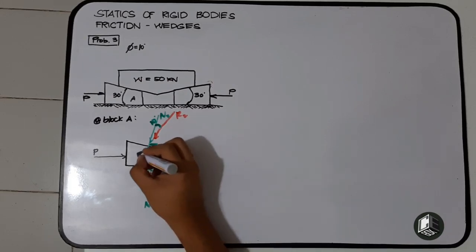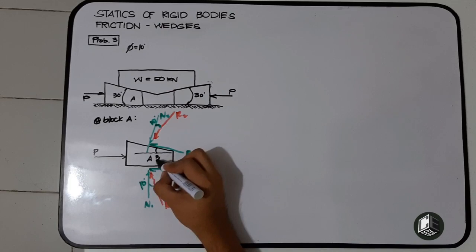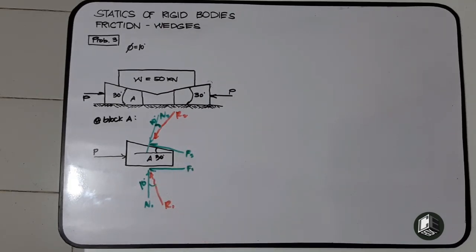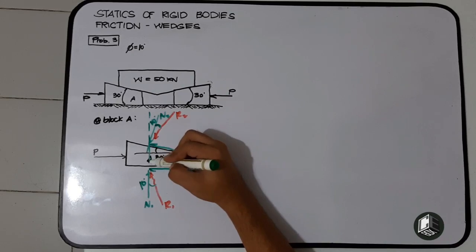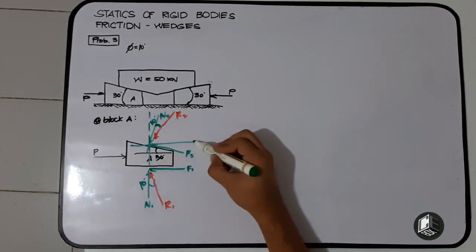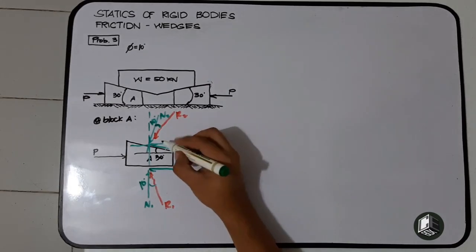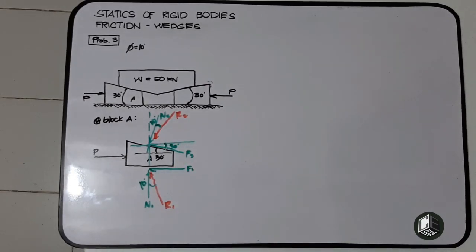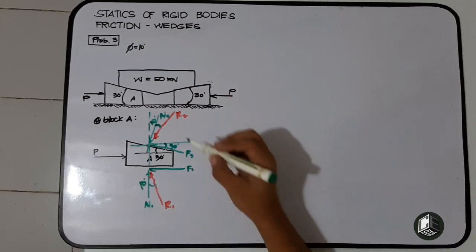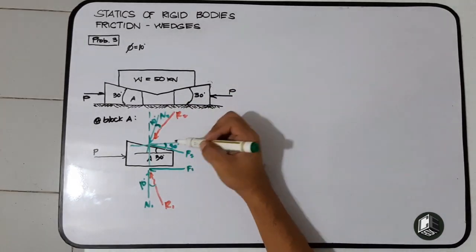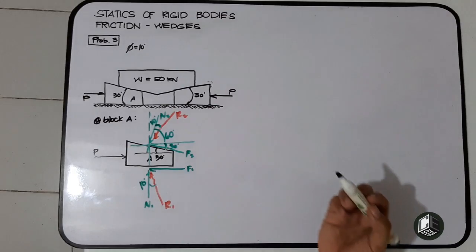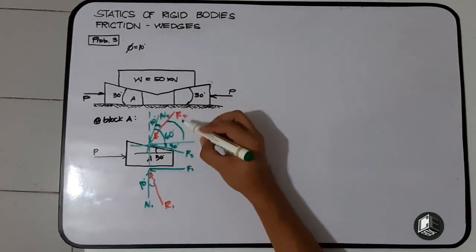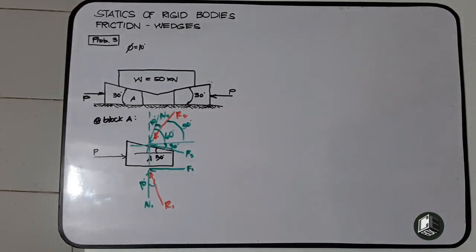If this inclined surface is 30 degrees with horizontal, when we create a vertical axis here, this is our x-axis. This is equal to 30 degrees. So our normal force, if this is 30 degrees, will be at 60 degrees. So 60 degrees minus 10, our R2 with respect to x-axis is 50 degrees.